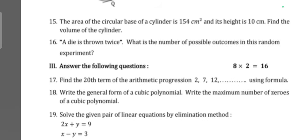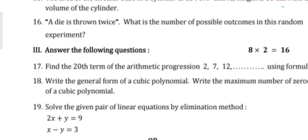Next main: Answer the following questions. Two mark questions. Find the 20th term of arithmetic progression 2, 7, 12 using formula. Question 18: Write the general form of cubic polynomial. Write the maximum number of zeros of a cubic polynomial. Question 19: Solve the given pair of linear equations by elimination method: 2x plus y is equal to 9, x minus y is equal to 3.